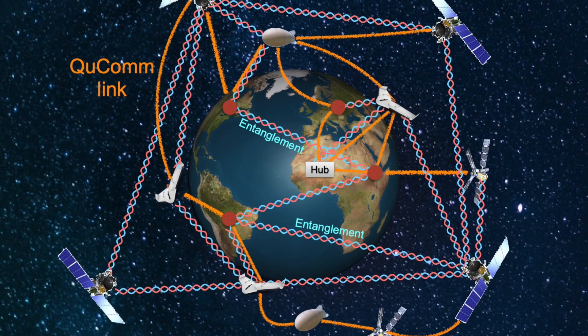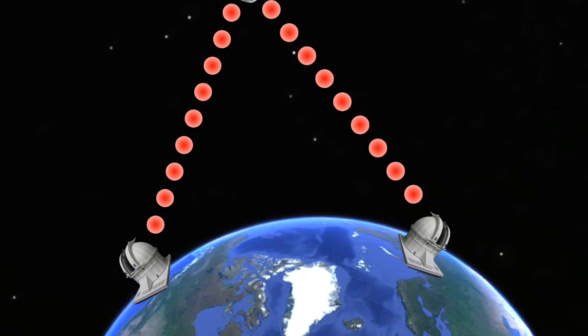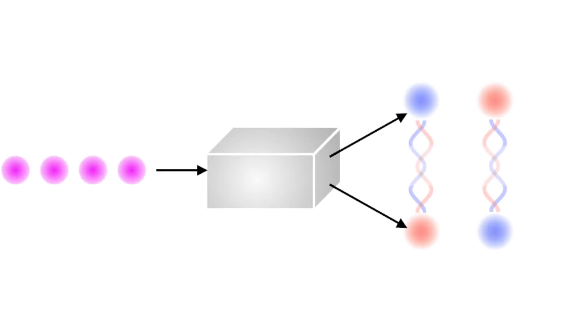When you transmit information with entangled photons, you can actually take measurements on the received photons to make sure that the information carried on the entangled photons hasn't been altered by an opponent, thereby ensuring the security in communication.